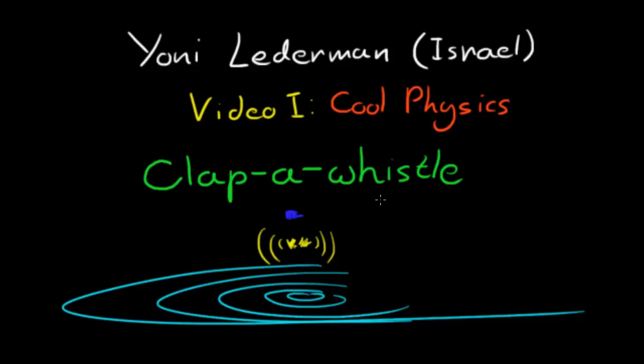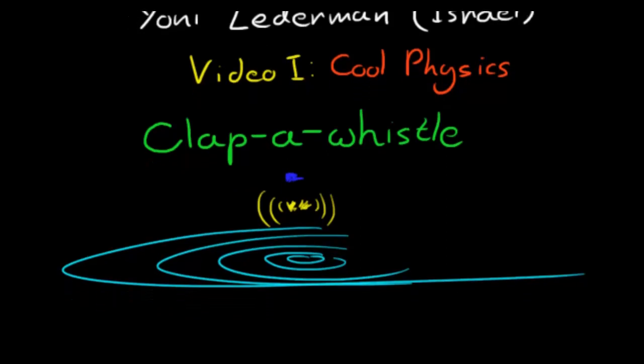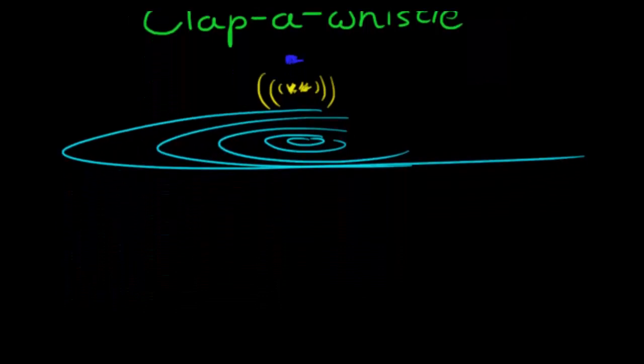What does that exactly mean? Well, it actually means what it says. You'll be able, by the end of this video, given some circumstances, to clap and the result will be a whistle. Now imagine that. How can that be? We're going to have to go through the fundamentals of sound a little bit and understand what type of situation could actually create a whistle using a single clap.